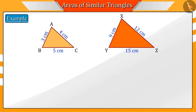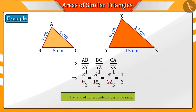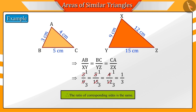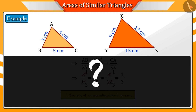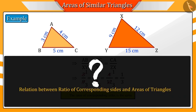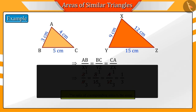What do you understand by observing the given triangles? These are similar triangles because the ratios of their corresponding sides are the same. But can you tell the relation between the ratio of the corresponding sides and the area of the triangle? Let's discuss this.